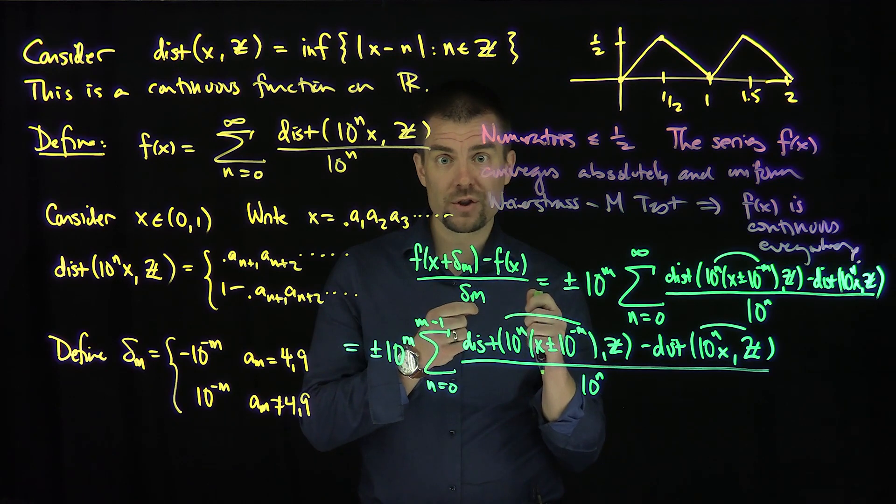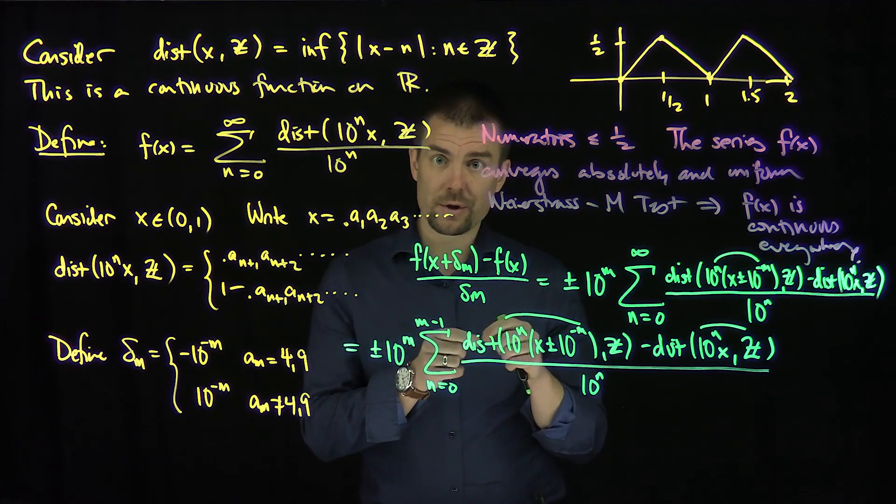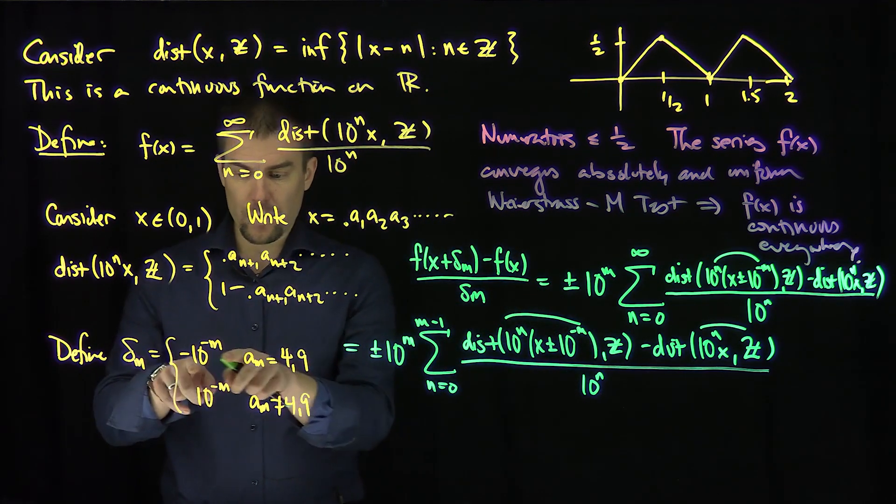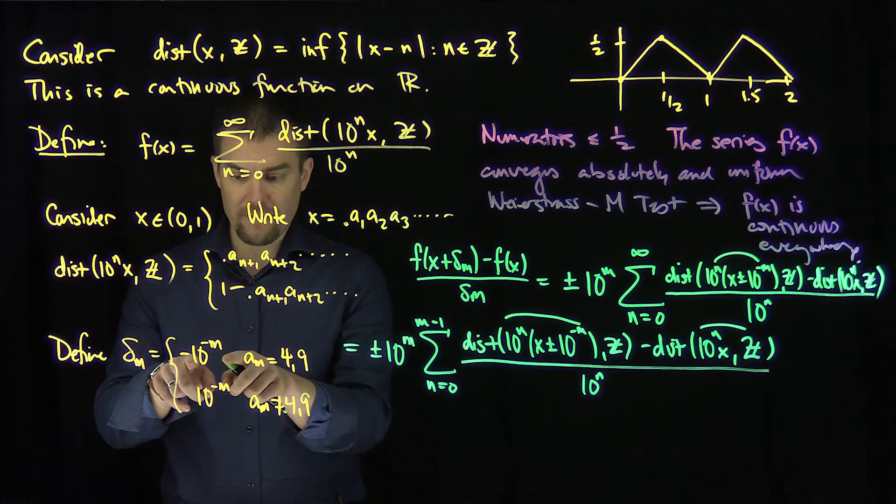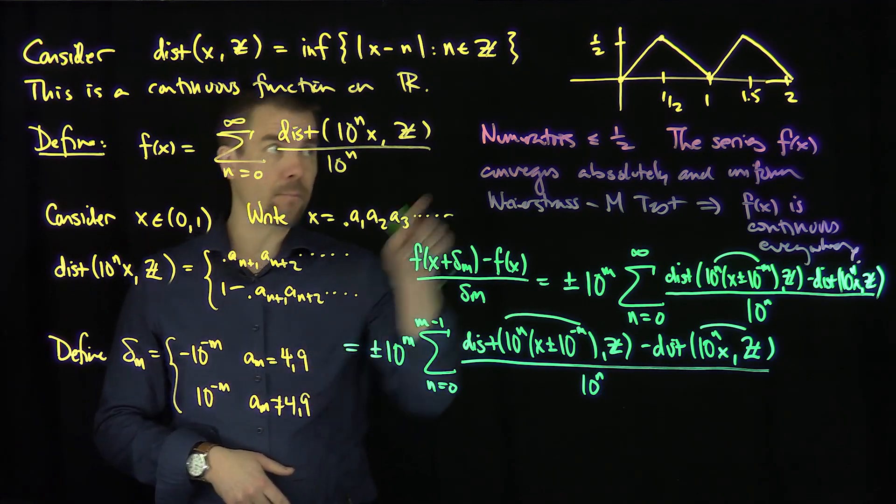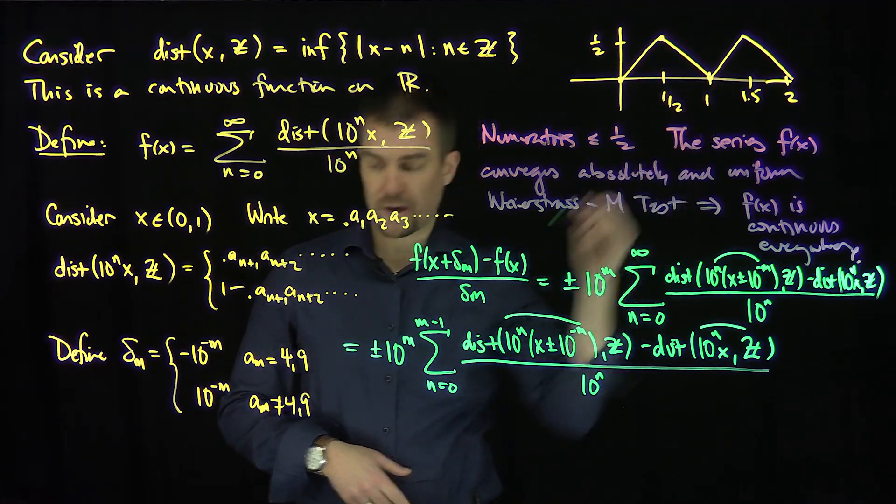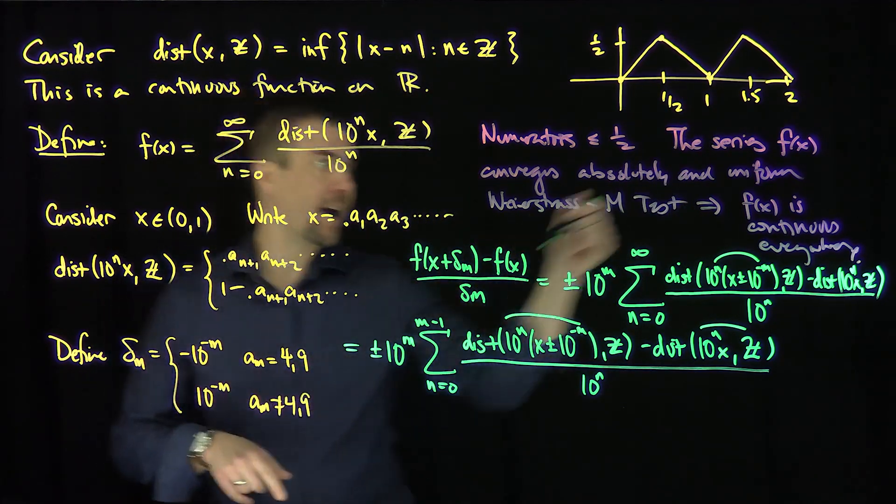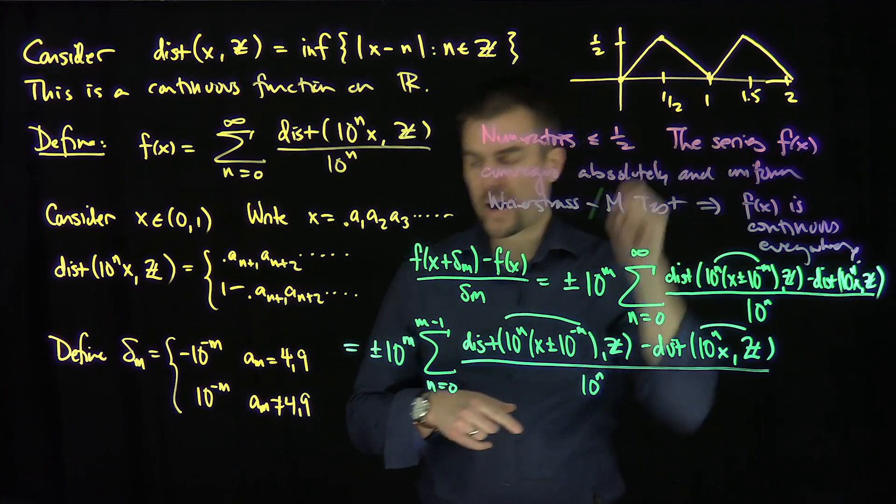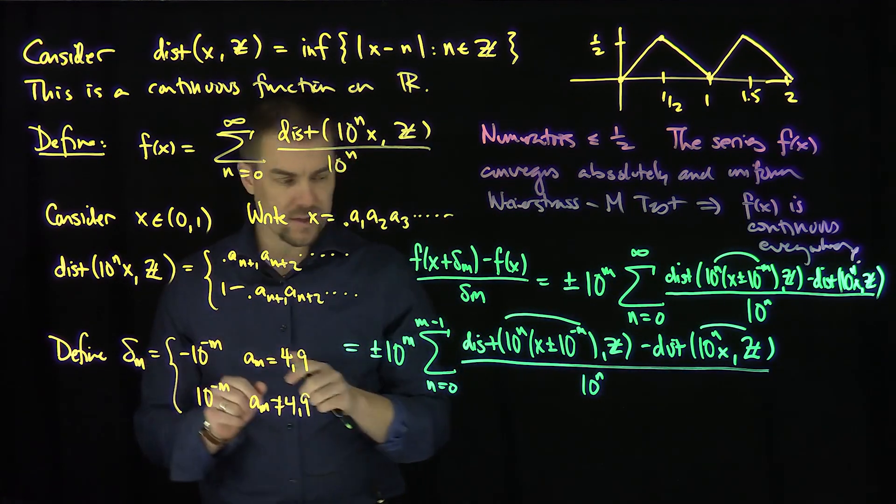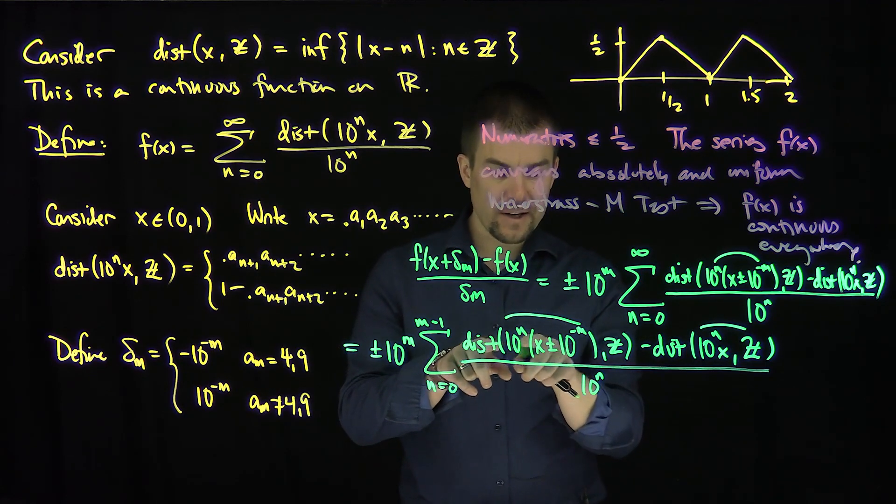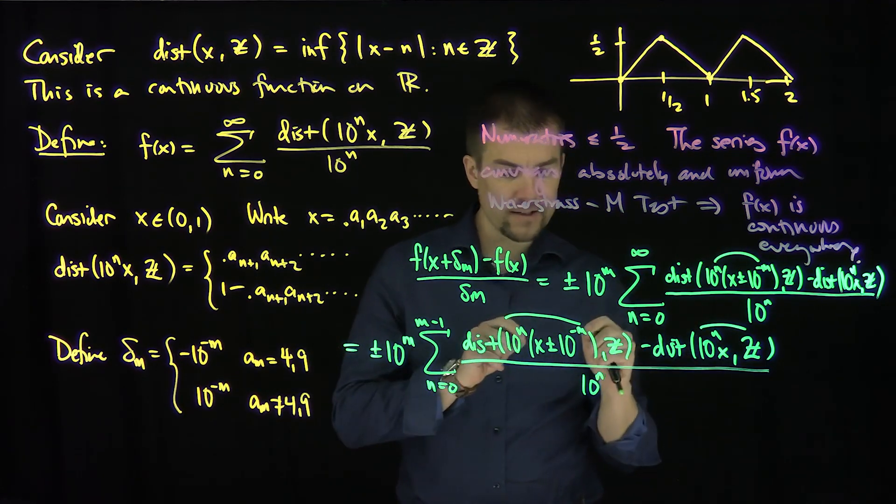So really, all we're changing is the distance to the integers. The reason why we have a negative is that if a_m equals four and if I added one to a_m, it would push me into the second region. And if it was equal to nine, it would push me into the next range. So this choice of delta_m maintains that the distance between this point and this point is exactly going to be...